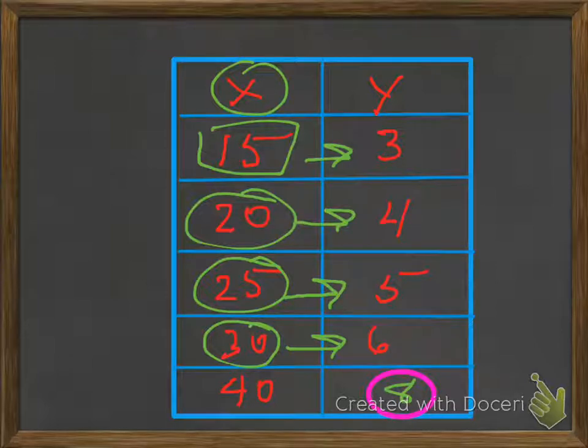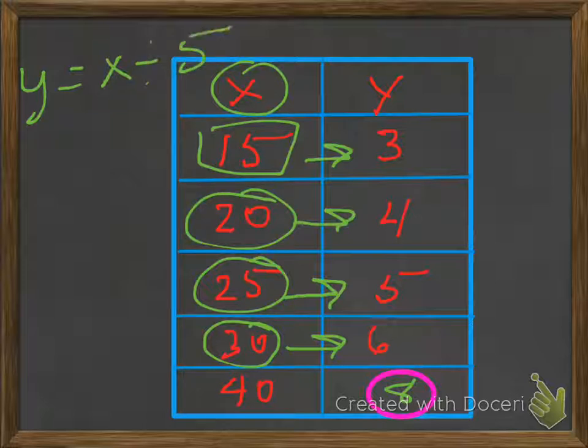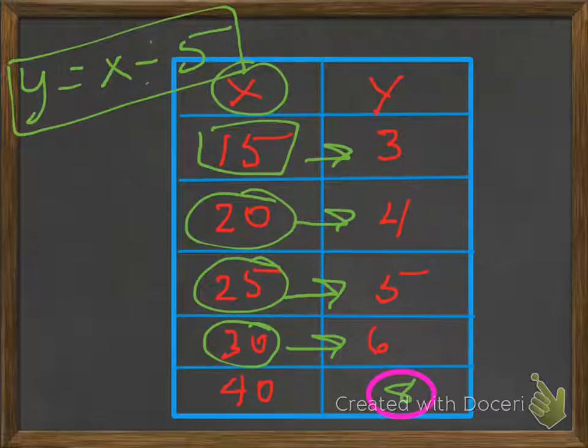So what's the rule? The rule is Y equals X divided by 5. That's our rule. Y equals X divided by 5. Did you get that? Good.